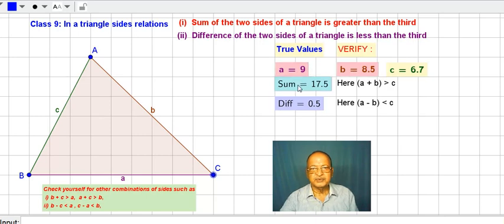So, we will see here. A plus B is greater than the C or not. You can say 9 plus 8.5. That is 17.5. Sum is coming. Now, it is greater than the C. So, first, in this condition, we have verified it. So, you can prepare a table.